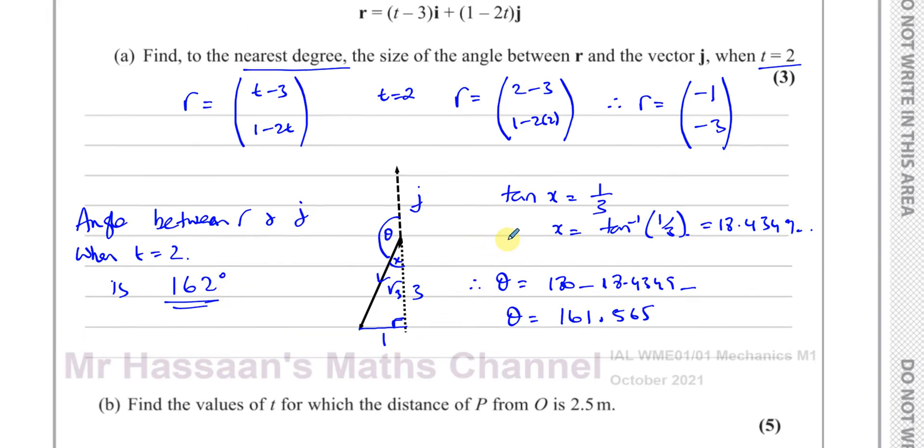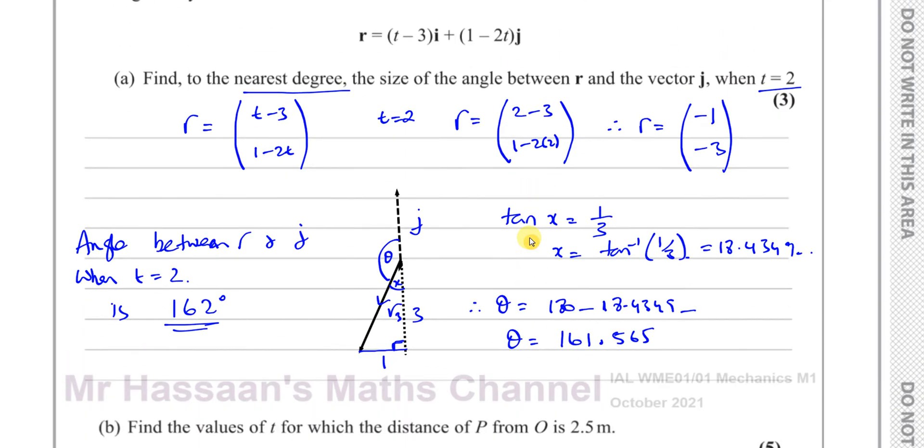Then it says find the values of t for which the distance of P from O is 2.5 meters.